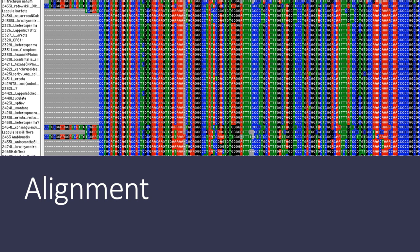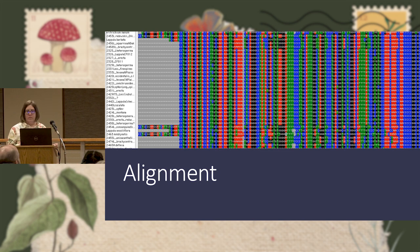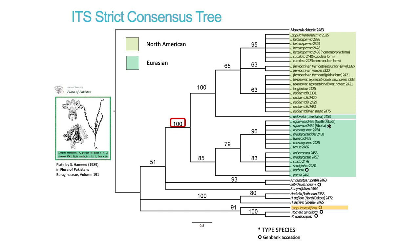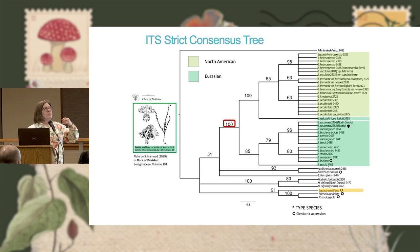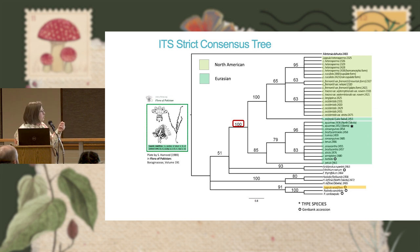What you're looking at is called an alignment — the sequences come back and we put them in alignment. You can see there's not a lot of variation, but there is some, and it's that variation that we use algorithms to calculate what eventually becomes a phylogenetic tree. There are statistical analyses to test just how strong the support is for a particular branch — there are a lot of steps that go into it.